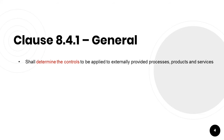Clause 8.4.1 explains the general requirement and sets the base for the other requirements to follow. It states that the organization shall ensure that externally provided processes, products and services are conforming to the requirements. There are three important requirements in this clause. First, the organization shall determine the controls to be applied to externally provided processes, products and services under three criteria: products and services intended for incorporation into the organization's own products and services; products and services provided directly to customers by external providers on behalf of the organization; and a process or part of a process provided by an external provider as a result of a decision by the organization.